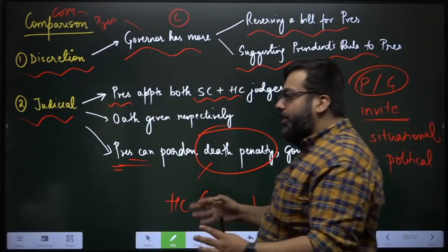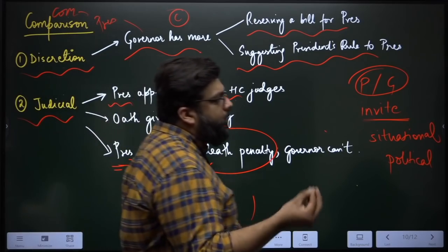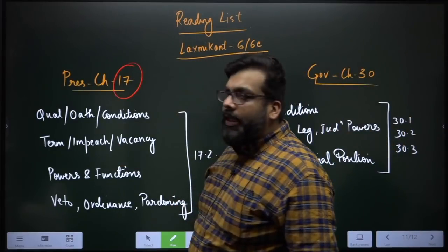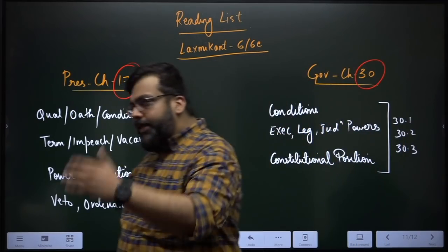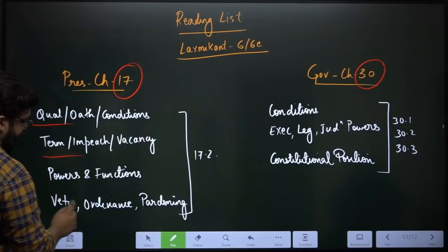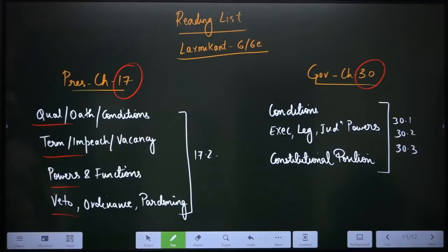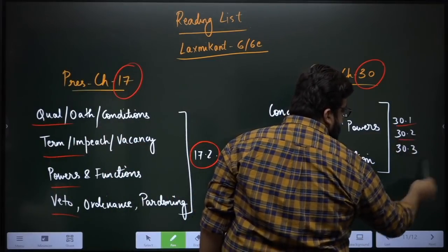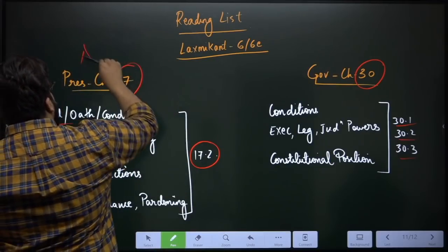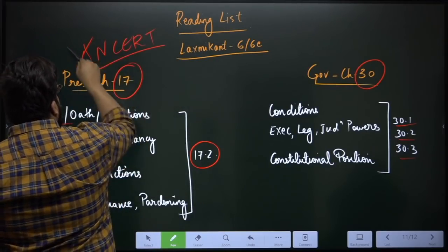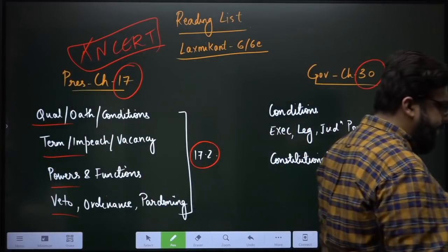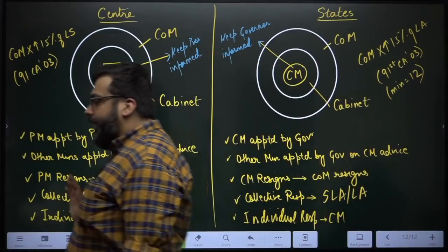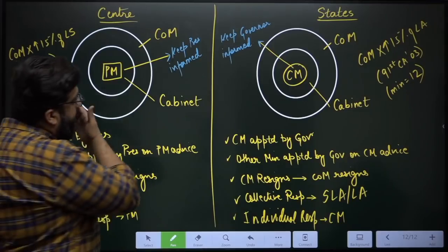The reading list is straightforward: Chapter 17 of Lakshmikanth for the President and Chapter 30 for the Governor. Focus on qualifications, terms, powers and functions, veto, ordinance, and pardoning. Read Table 17.2 for the President and Tables 30.1, 30.2, and 30.3 for the Governor. You do not need the NCERT for this topic as the questions are fairly procedural.